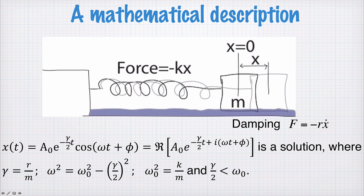The rate of decay here, γ/2, gamma is given by r/m. And the oscillation frequency here is now given by this equation here. So you can see this oscillation frequency, ω with damping, is just a little bit slower than the oscillation frequency without damping, which is ω₀.